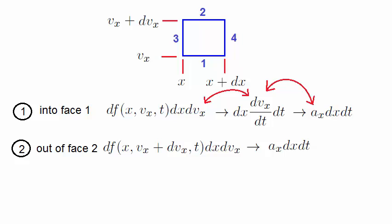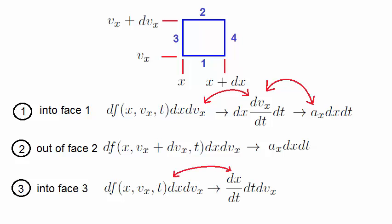If we now look at the particles going into face 3, it is given by df, again, multiplied by the volume element. Except this time, when the particles go from faces 3 to 4, at a particular vx value, then we can say that the x value can change. So we rewrite dx in the following way. Note that dx/dt is nothing more than the velocity along x, so we can tidy this up in this way.